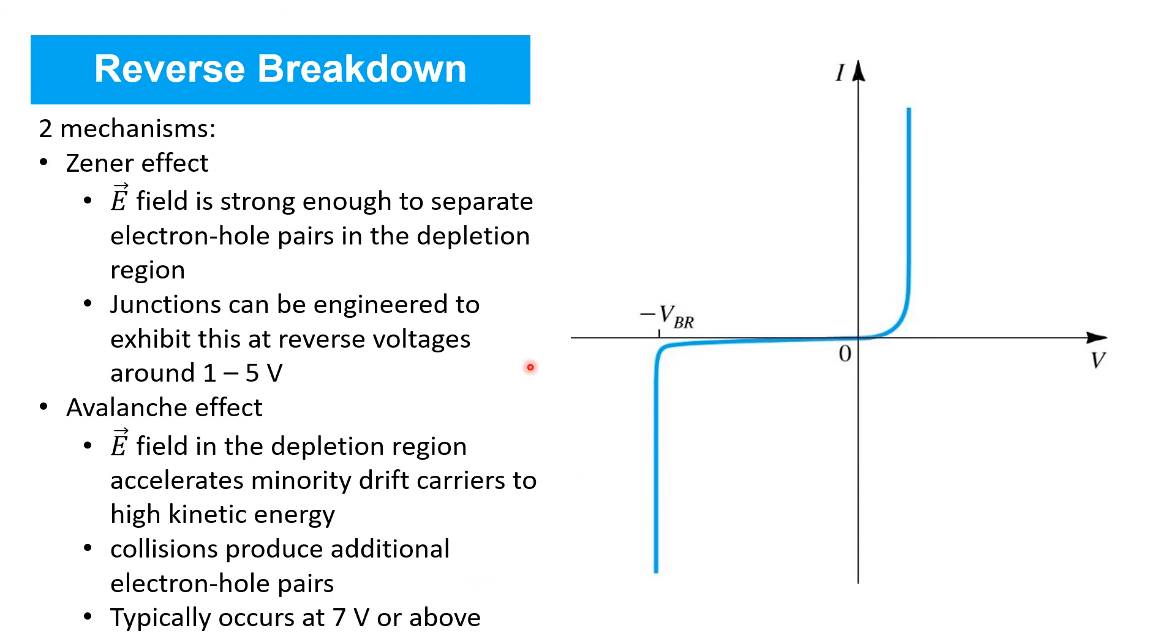So which of these two effects arises first depends on the construction of the diode. Zener effects are often engineered to be useful in producing a fixed reversible voltage across the PN junction. Whereas the avalanche effect may give rise to overheating and thereby cause the diode to be damaged.